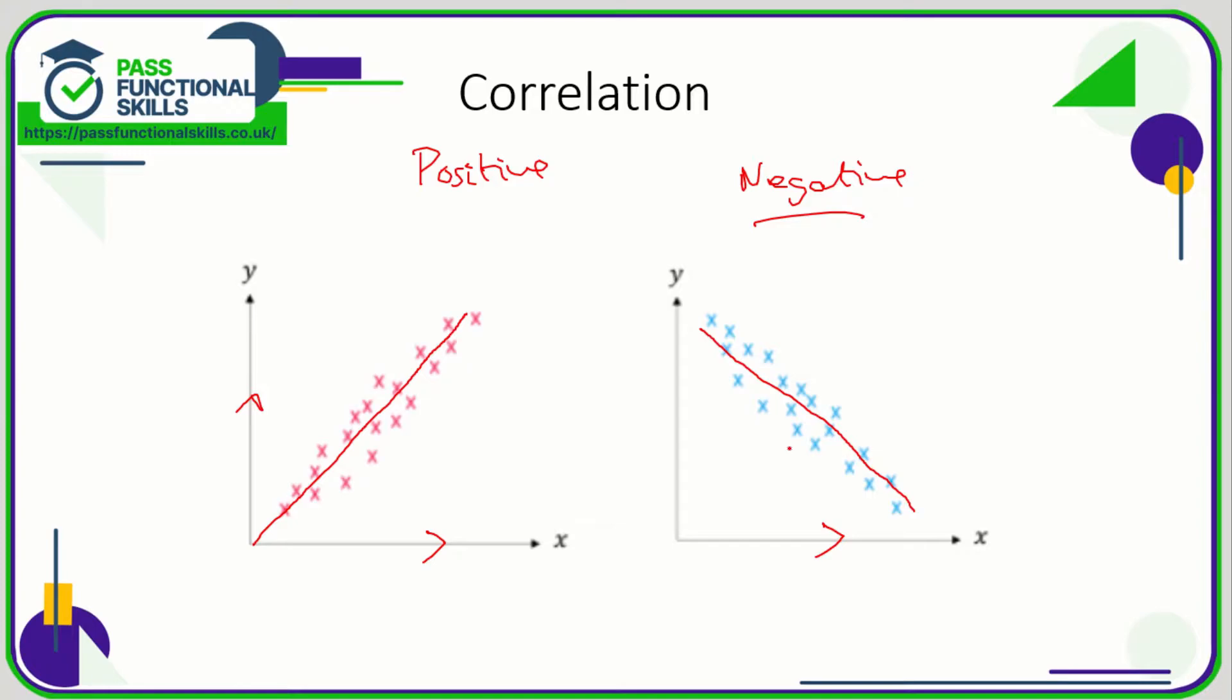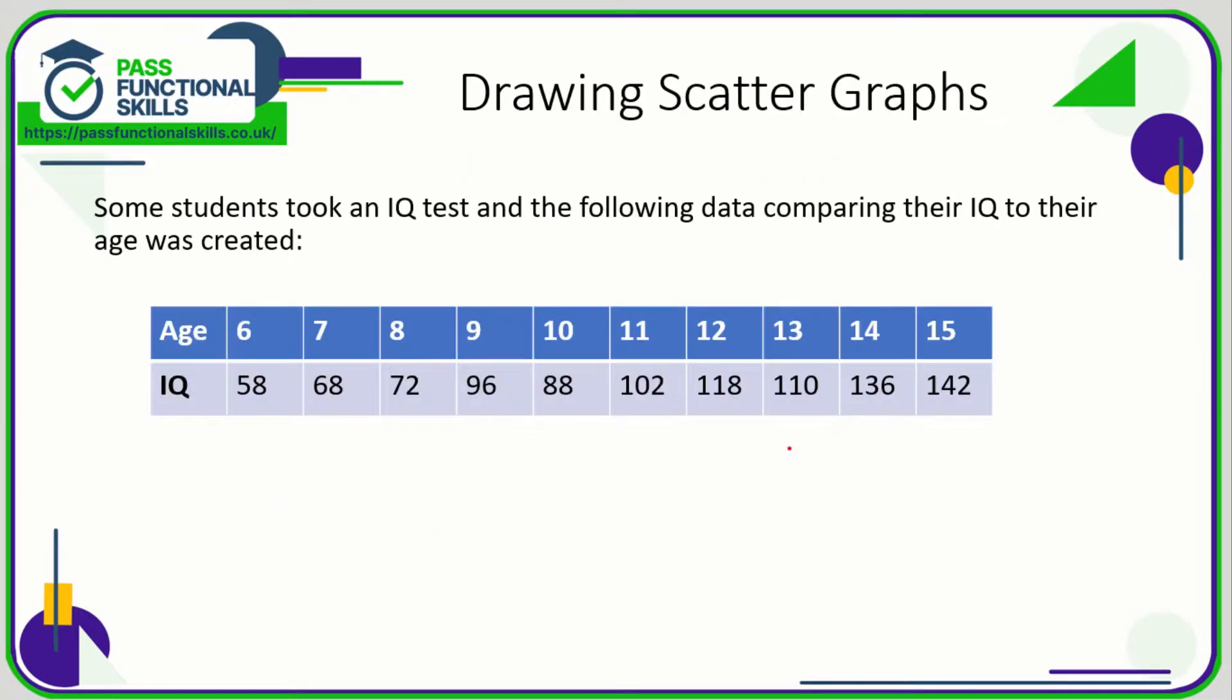Now, drawing scatter graphs is something you need to know. We've been asked to create a scatter graph for age and IQ. We need two axes: one for age and one for IQ. Often you're told which axis to plot which set of values. I would normally plot on the horizontal the more consistent data set.